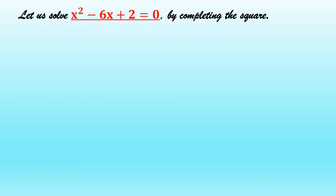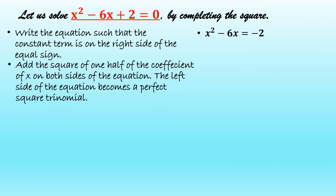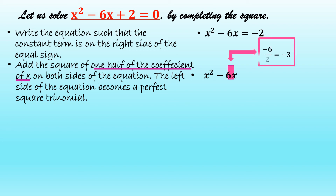We can now solve x squared minus 6x plus 2 equal to 0 by completing the square without using algebra tiles, following the same steps as example number 1. Step 1: write the equation such that the constant term is on the right side of the equal sign. Our new quadratic equation would be x squared minus 6x is equal to negative 2. Find one half of the coefficient of x. The coefficient of x is negative 6, so one half of negative 6 is equal to negative 3.